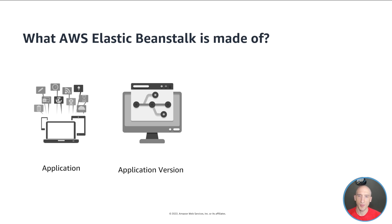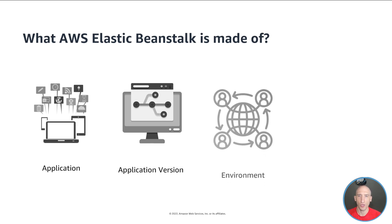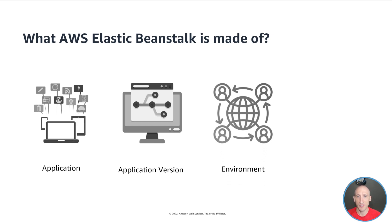The next concept that is really important to call out is environment. An environment is a collection of AWS resources running an application version. Each environment runs only one application version at a time. However, you can run the same application version or different application versions in many environments simultaneously. When you create an environment, Elastic Beanstalk provisions the resources needed to run the application version you specified.